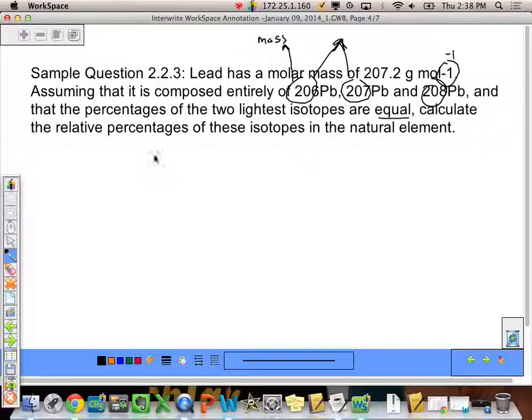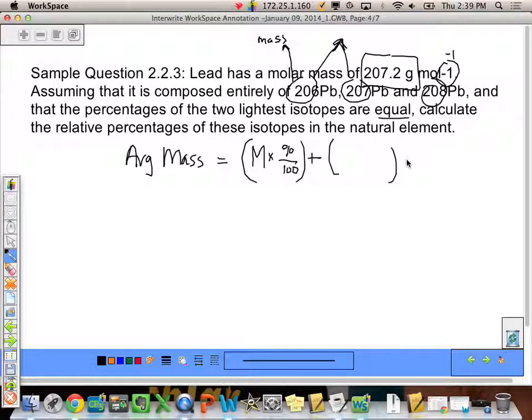And I need to calculate the relative percentages of these isotopes in the natural element. So I'm going to do a little bit of algebra here. I know overall that my mass is 207.2 grams per mole. Well, let's look at the general format for this first. We know that our average mass is going to be equal to the actual mass of the isotope, so we'll do an M for that, times the percent abundance or in decimal form. So percent divided by 100, the relative abundance of it plus, and then I'm going to do that for each of my isotopes no matter how many I have. This is my mass of my first one, the relative abundance of my first one, the mass of my second one times the relative abundance of my second one, so on and so forth.